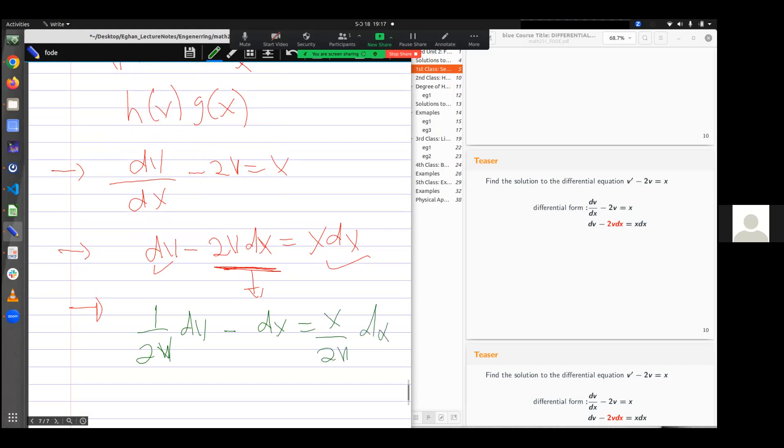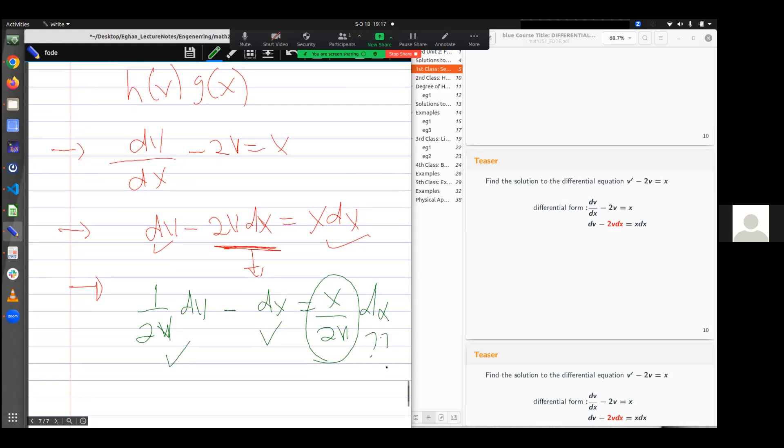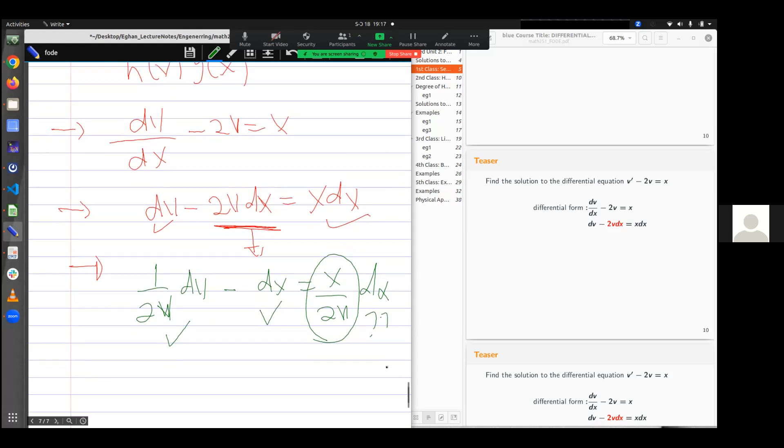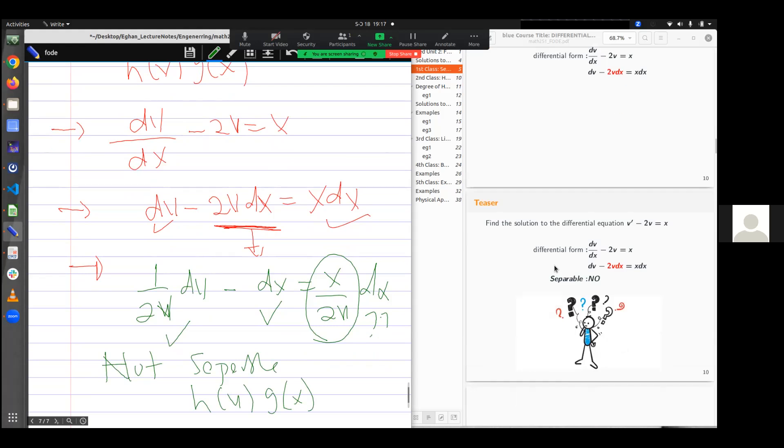If I move to this stage, you realize that I have a problem here. So this is good. But then the last step now becomes a problem. And so with this example, it is not separable. It is not separable because I can't write the terms as v only and then x only. Hence, not separable.